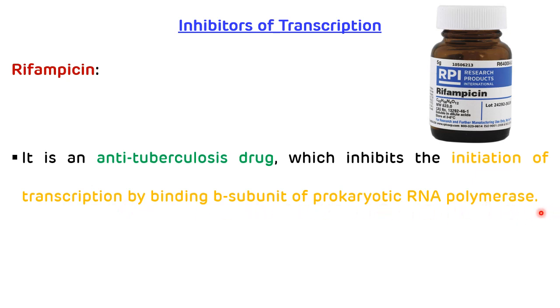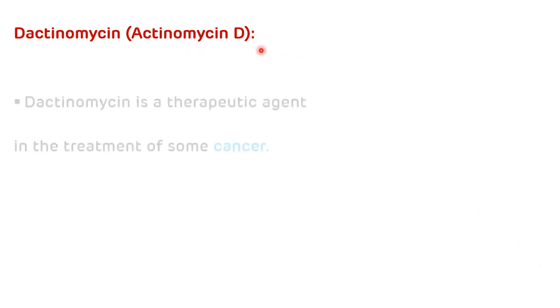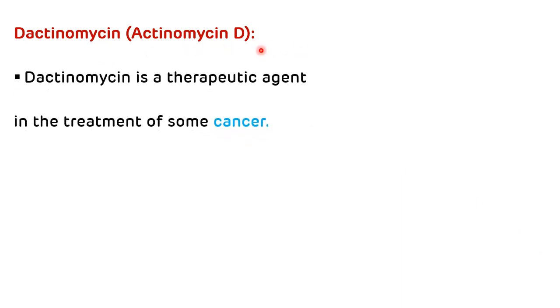It doesn't have any effect on eukaryotic nuclear RNA polymerases. The second example of an inhibitor of transcription is dactinomycin, also known as actinomycin D, and it is used as an anti-cancer drug.